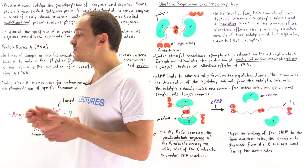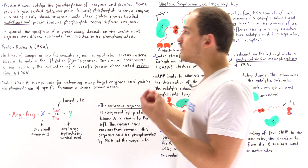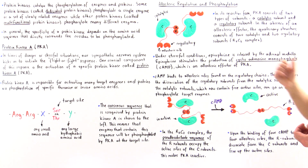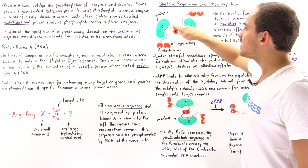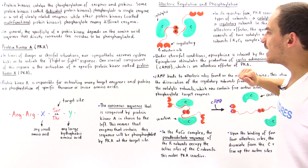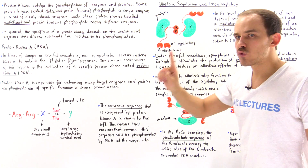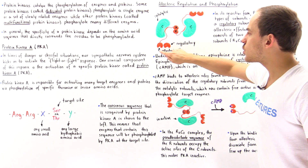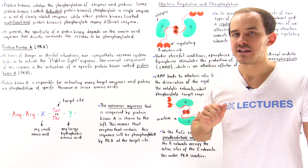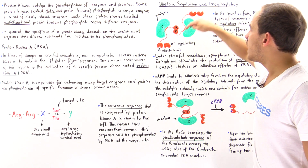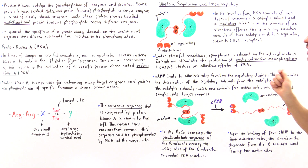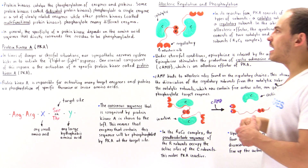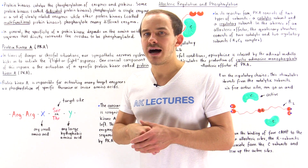Examining a single regulatory chain, each regulatory chain contains two allosteric sites. Since we have two regulatory chains in the R2C2 complex, that gives us a total of four allosteric sites that cyclic adenosine monophosphate can bind to.